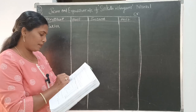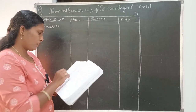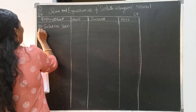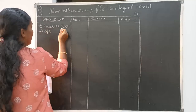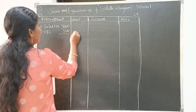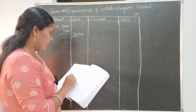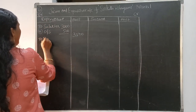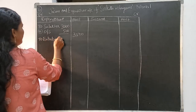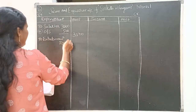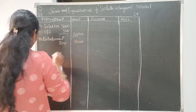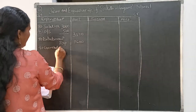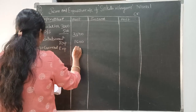There is an adjustment for salaries — outstanding salaries are given. Salary paid is 3000, and we add the current year outstanding, giving a total of 3500. Next, entertainment expenses are 1600. And next, general expenses are 600.